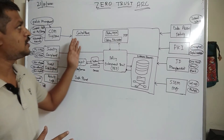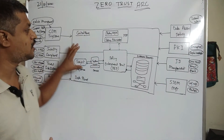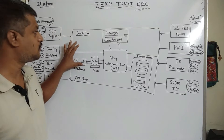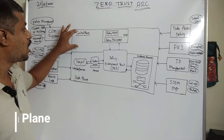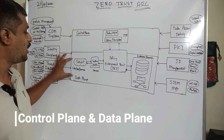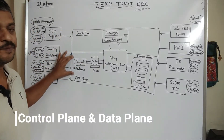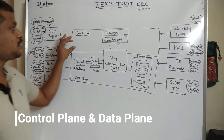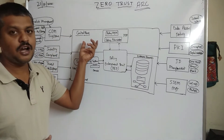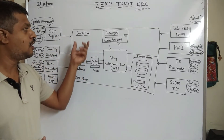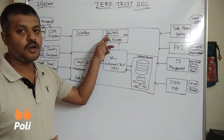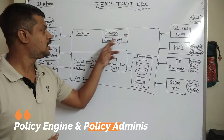So first, zero trust structure: core components — control plane and data plane. First we will talk about the control plane. In the control plane we have the policy engine.